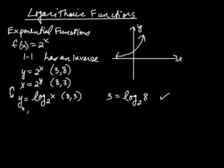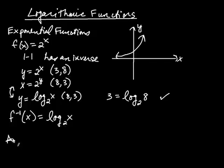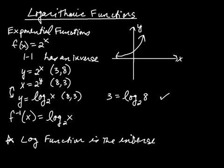Back to our example: when y is isolated, we're finding an inverse. So we write f⁻¹(x) = log base 2 of x. This tells us something very important: the exponential function and the logarithmic function with the same base are inverses. The base here is 2 for both, and those two functions are inverses of each other. The log function is the inverse of the exponential function.